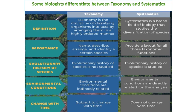We have the differentiation between these two terms on the basis of their definition, importance, evolutionary history of species, and environmental conditions, and how they change with time. According to definition, taxonomy refers to the classification of organisms in biology in a highly ordered manner, while systematic refers to the study of organisms for determination of evolutionary relationships. As far as importance is concerned, taxonomy gives names, descriptions, arrangement of plants, and identifies certain species.